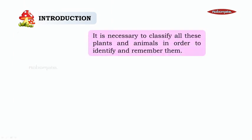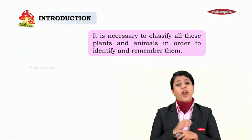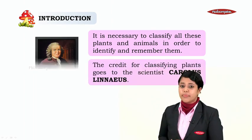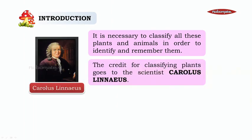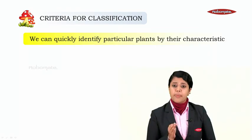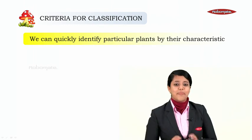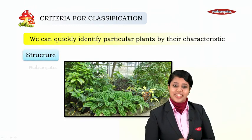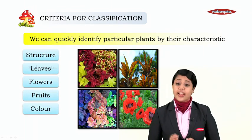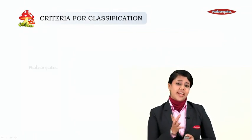large beasts. It is necessary to classify all these plants and animals in order to identify and remember them. The credit for classifying plants goes to the scientist Carolus Linnaeus, and his method of classifying plants is used all over the world. We can quickly identify a particular plant by its characteristic structure, leaves, flowers, fruits, color, and odor.